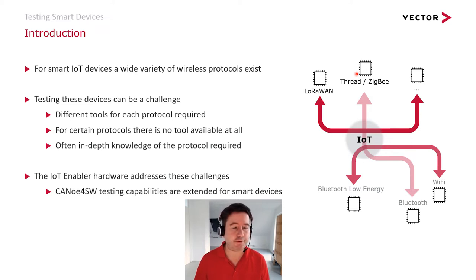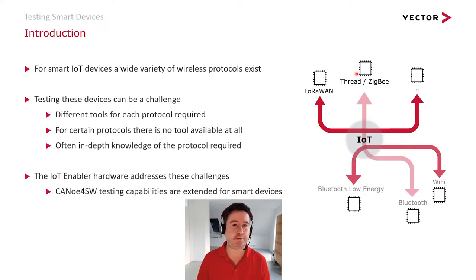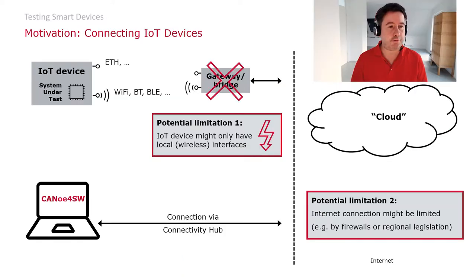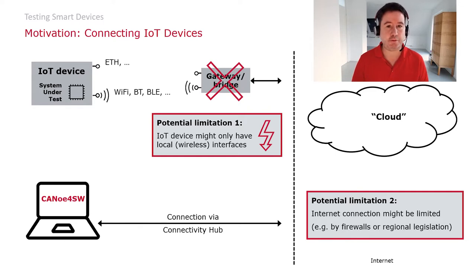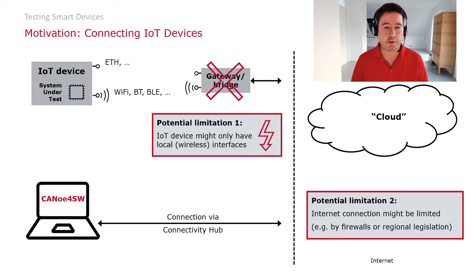The IoT Enabler hardware addresses these challenges. Using the IoT Enabler hardware, Canoo for software testing capabilities are extended for smart devices. One possibility to connect IoT devices is using the cloud, which Urs already mentioned in his last talk. However, in certain cases the cloud is not available because of internet regulations or there is no internet connection available at all.